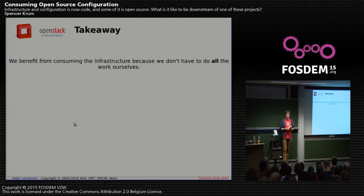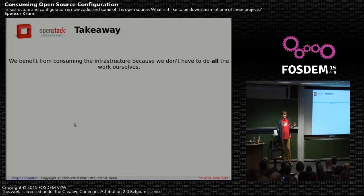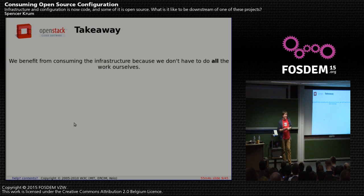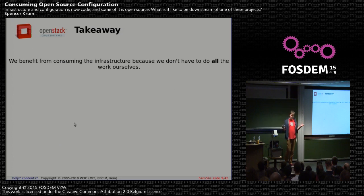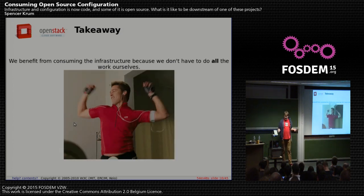There are immediate takeaways on why this is good. The simplest is that we benefit from consuming infrastructure because we don't have to do all the work ourselves. It's the inverse of 'not invented here.' On my robot team in college, we were building a quadcopter, and our mentor said to start with the Parrot AR Drone and add features on top. We said no, we need to write our own — and ten months later we finally had something that flew.